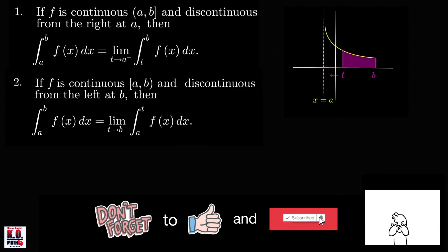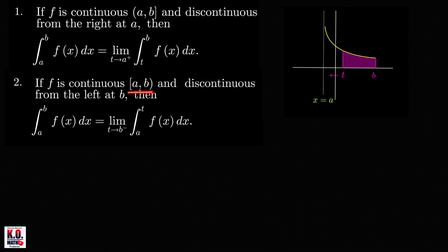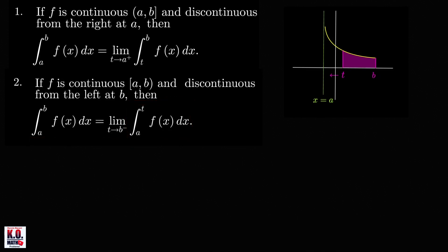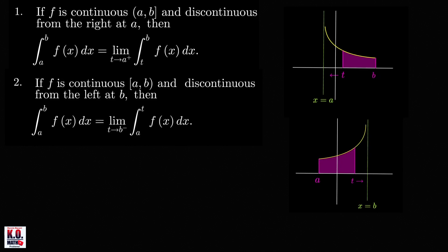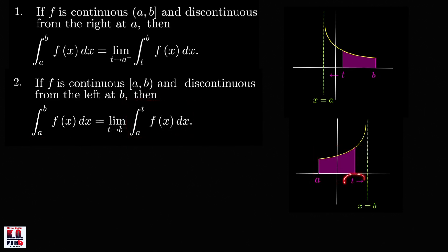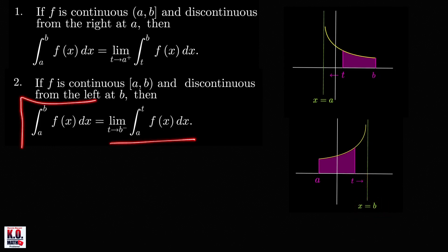Similarly, if the integrand is continuous on the half-open interval a, b and discontinuous from the left at b, we compute this integral by taking the limit of the integral from a to t as t approaches b from the left. So if we have a function with an infinite discontinuity at b, we find the integral from a to t of f(x) dx, which represents the area up to t, and let t approach b from the left. If this limit exists, the improper integral is convergent; otherwise it is divergent.